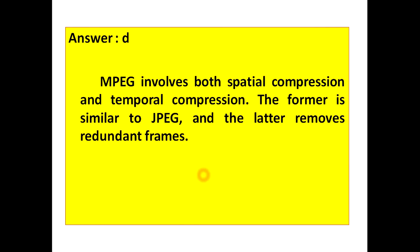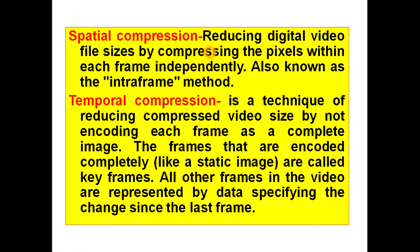Answer to the question is option D, that is redundant. MPEG involves both spatial compression and temporal compression. This spatial compression is similar to that of JPEG, and temporal compression is used to remove the redundant frames. Let's try to know about both spatial compression and temporal compression. Spatial compression reduces digital video file sizes by compressing the pixels within each frame independently, and that's why it is also known as the intra-frame method.